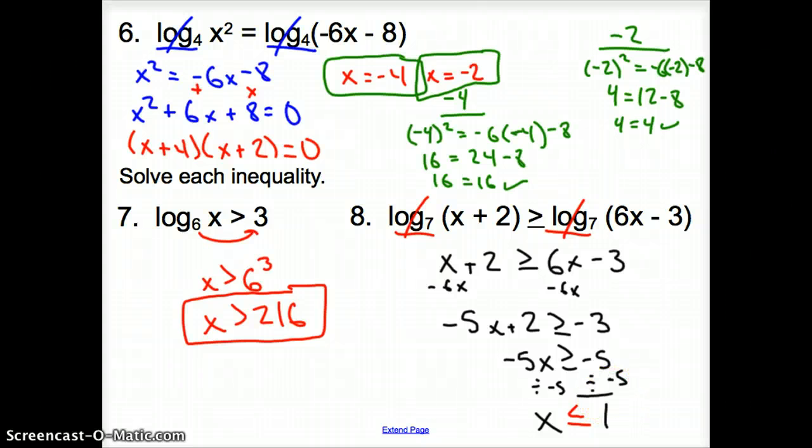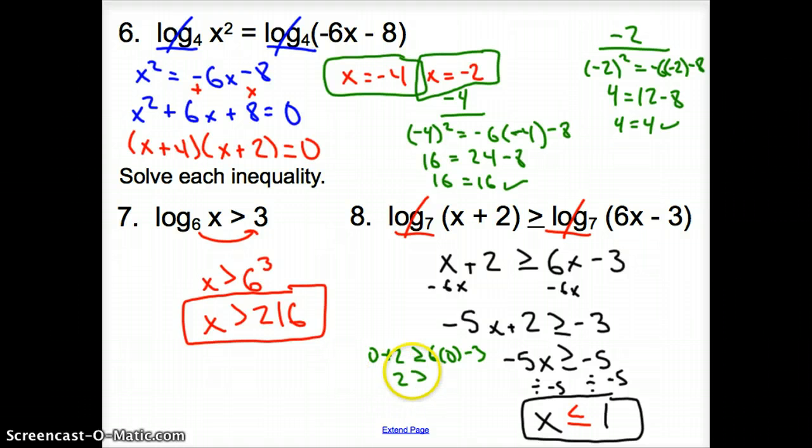And x is less than or equal to 1 for our final answer. Now, could you check this? Absolutely. You could always pick 0 and plug because 0 is less than 1. So, if I plug in 0 in for my x's here, I'm going to go 0 plus 2 is greater than or equal to 6 times 0 minus 3. Here, I have 2. And is 2 greater than negative 3? Yes, it is. So, this is for sure my answer. And that does it for section 7.4, solving logarithmic equations and inequalities. Good day.